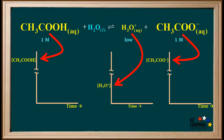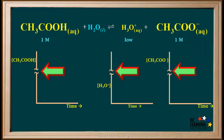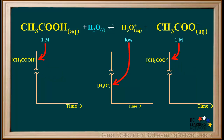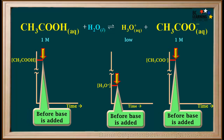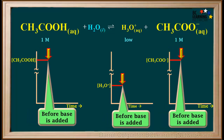Now we'll construct graphs showing how the concentrations of the three species in the equilibrium will vary when we add a base to this buffer and it readjusts. The y-axis on these graphs is actually much longer than portrayed in the diagram. The 1 molar concentrations of acetic acid and acetate ion are considerably higher than that of the hydronium ion. First, we'll consider the concentrations of the three species before we add the base. The concentrations of all three species remain constant.